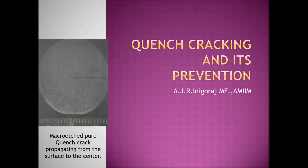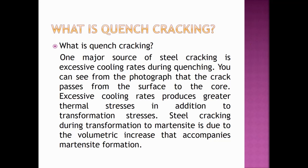You can see a macro-etched structure where a quench crack is propagating from the surface to the center. One major source of steel cracking is excessive cooling rates during quenching. As seen in the photograph, the crack passes from the surface to the core. Excessive cooling rates produce greater thermal stresses in addition to transformation stresses. Steel cracking during transformation to martensite is due to the volumetric increase that accompanies martensite formation.